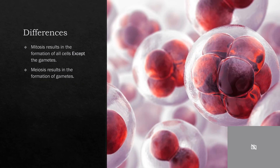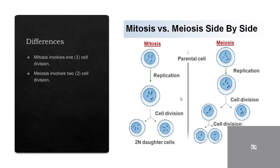Mitosis results in the formation of all cells except the gametes. Meiosis results in the formation of gametes. Mitosis involves one cell division, while meiosis involves two cell divisions.